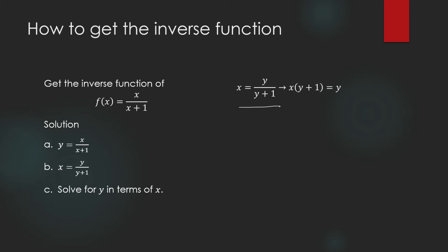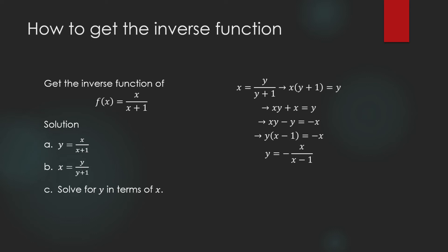To isolate y from x = y/(y+1), we multiply both sides by (y+1). This gives x(y+1) = y, which expands to xy + x = y. Rearranging, xy − y = −x. We factor out y to get y(x−1) = −x, then divide both sides by (x−1). The result is y = −x/(x−1). We then replace y with the inverse function notation, writing f⁻¹(x) = −x/(x−1).